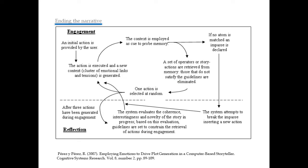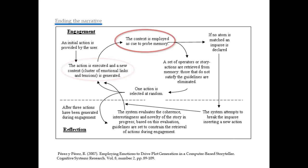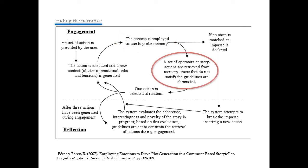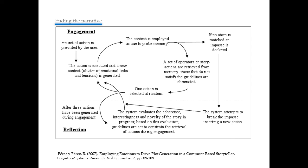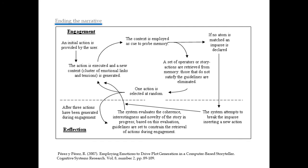In summary, the engagement-reflection cycle works as follows. An initial action is provided by the user. The action is executed and a new context is updated. The context is employed as a cue to probe memory. A set of historic actions are retrieved from memory, and those that do not satisfy the guidelines are eliminated. One action is selected and the cycle continues. After three actions have been generated during engagement, the system switches to reflection. During reflection, Mexica evaluates the coherence, interestingness, and novelty of the story in progress. Based on this evaluation, the guidelines are set to constrain the retrieval of actions during engagement. Then the system switches back to engagement.